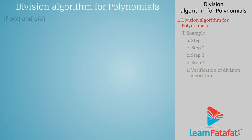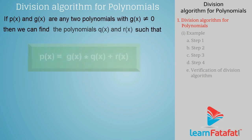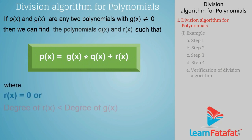Division algorithm for polynomials. If P and G are any two polynomials with G not equal to 0, then we can find the polynomials Q and R such that P is equal to G into Q plus R, where R of X is equal to 0, or the degree of R of X is less than the degree of G of X. This is called the division algorithm.